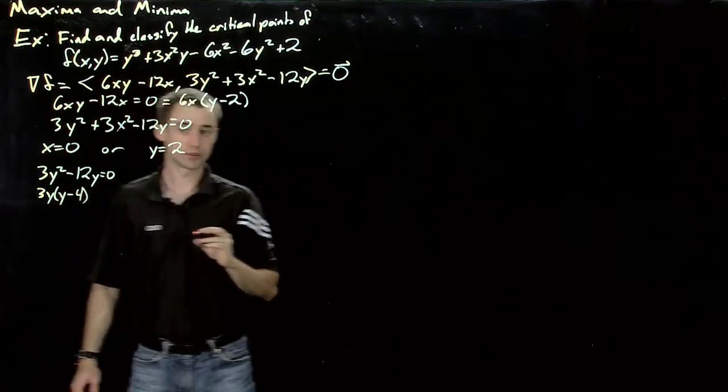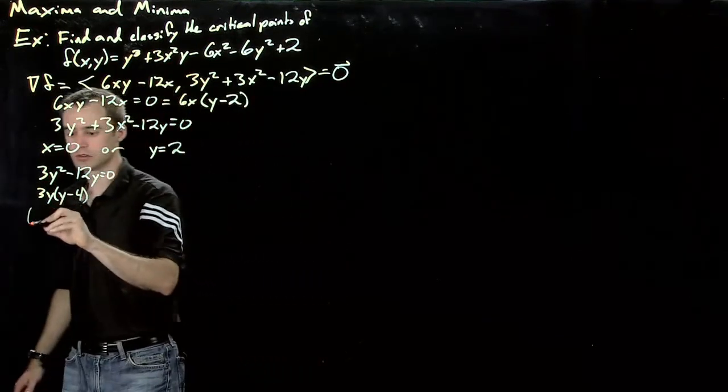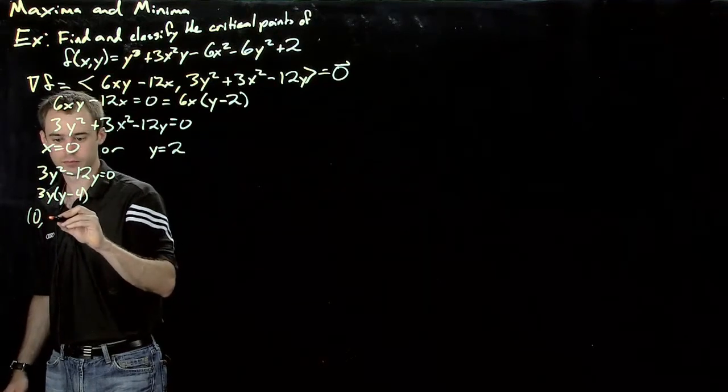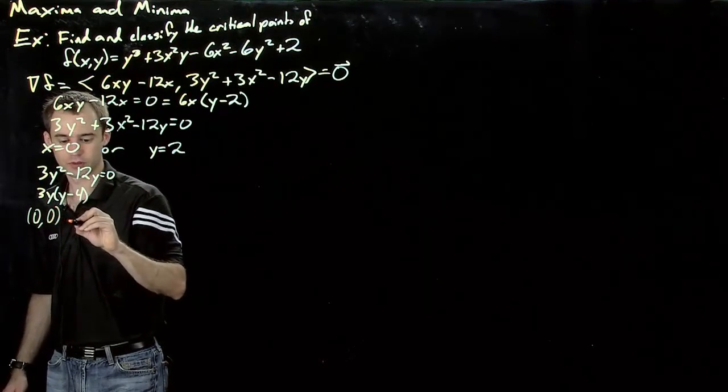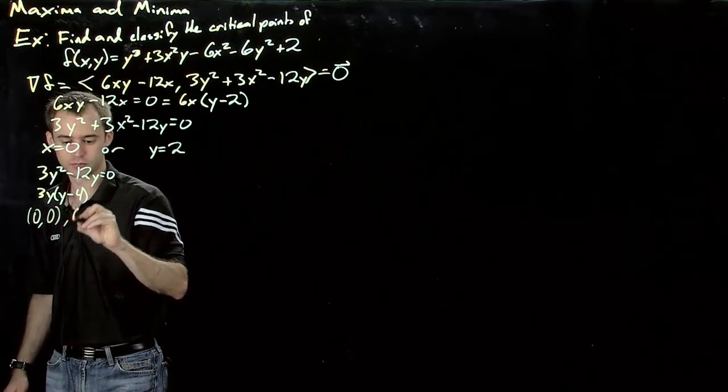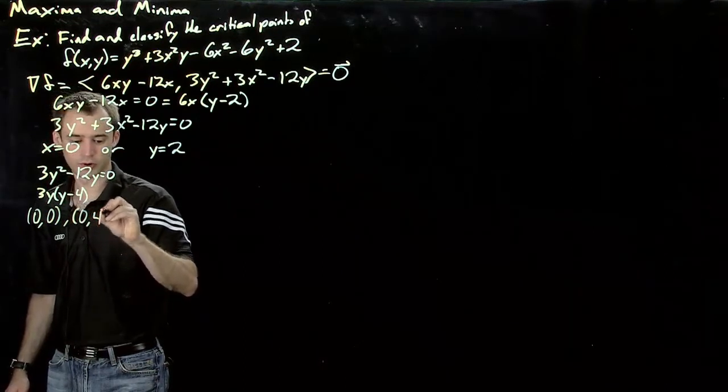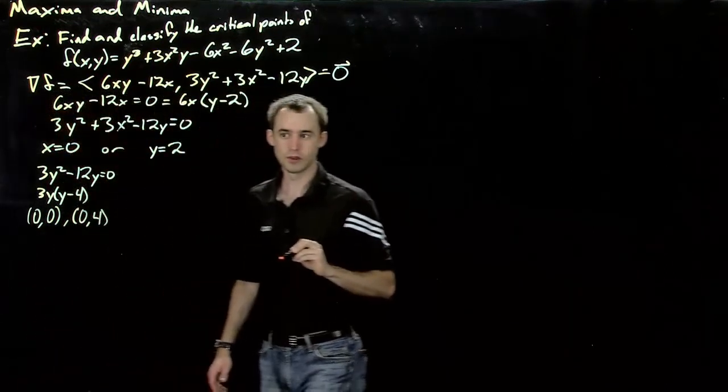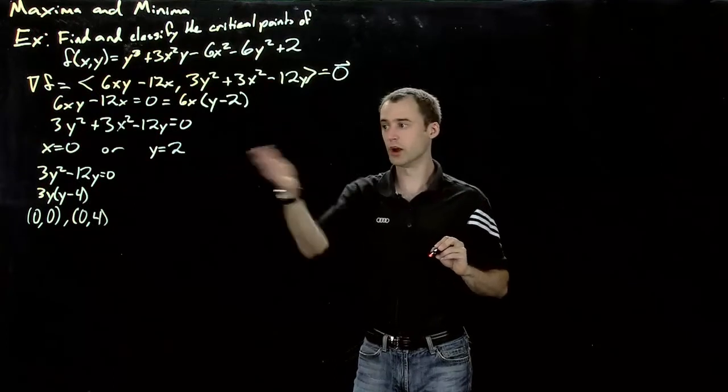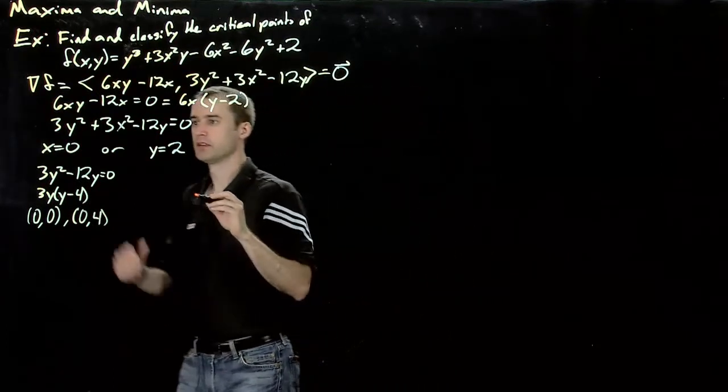So that gives us the critical points 0 comma 0 and 0 comma 4. Now let's examine the case where y equals 2.